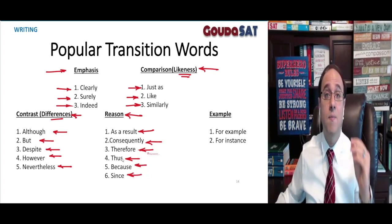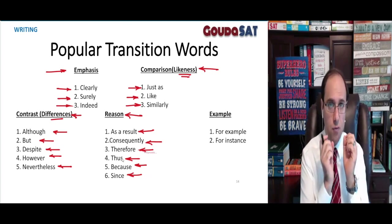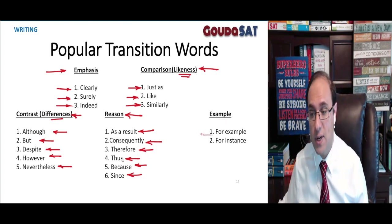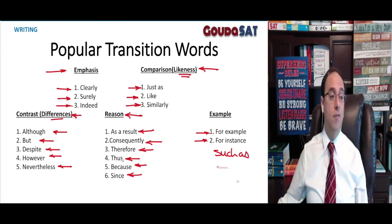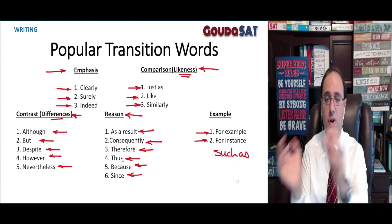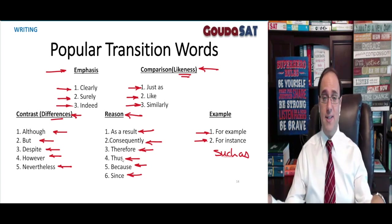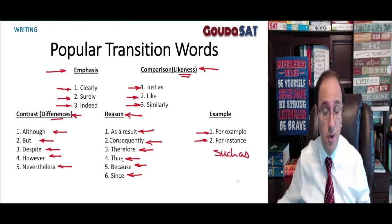All of these mean that there is a relationship of reason — cause and effect. For example, for instance, such as — if I have these in the middle of a sentence, all of these mean that one part is an example of the other. There are more words that appear on the test, but these are by far the most popular.